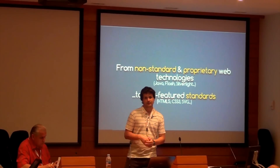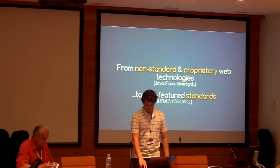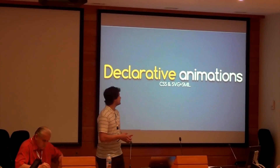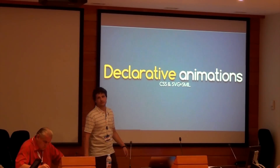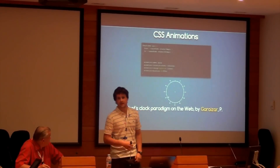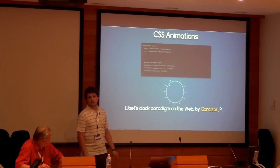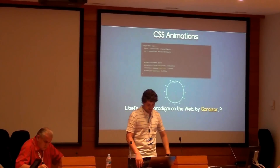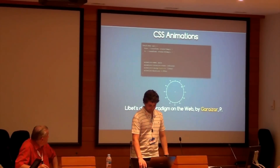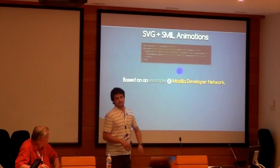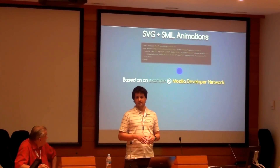So how can we use these new technologies in our online experiments and simulations? Let's talk about three issues. The first one is animations. To create declarative animations, we can use well-known technologies such as SVG plus SMIL, or new standards like CSS. Here is an example of the Libet clock paradigm programmed in CSS — just eight to ten lines of code to define the behavior. The same can be done with SVG plus SMIL.